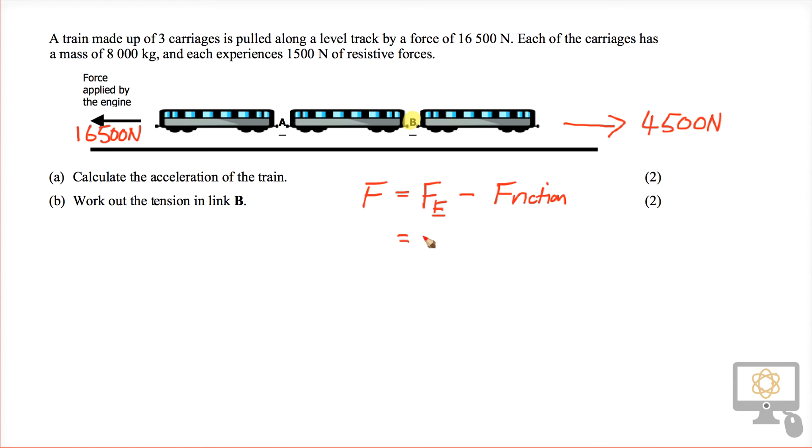If we do that sum it's relatively straightforward. That's 16,500 newtons minus 4,500 newtons, and that gives us an unbalanced force of 12,000 newtons.